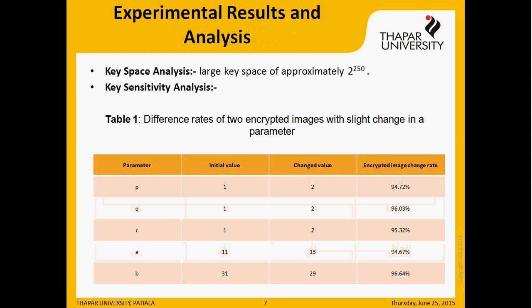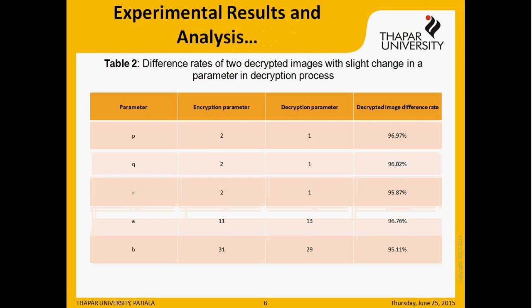Next, experiment results and analysis. Key space analysis: in the proposed cryptosystem, the combination of different parameters provides a large key space of approximately 2 to the power of 250, showing very large key space. For key sensitivity analysis, the table shows the difference rate of two encrypted images with a slight change in parameters. Another table shows the difference rate between the plain image and the decrypted image with a slight change in parameters.